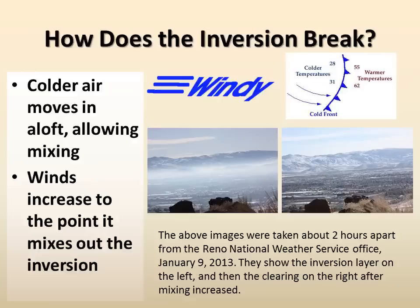The pictures in the graphic were taken about two hours apart from the Reno National Weather Service office on January 9, 2013. They show the inversion layer on the left and then the clearing on the right after the mixing increased.